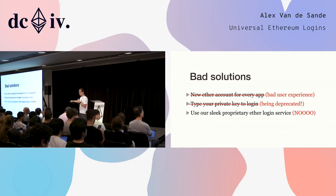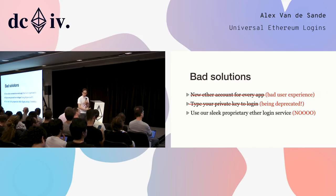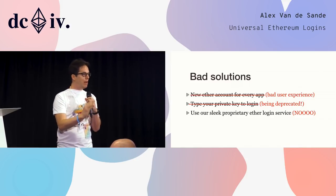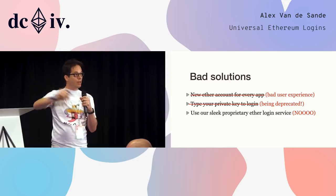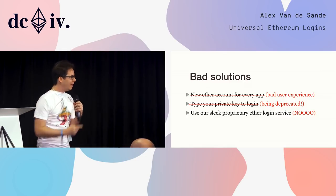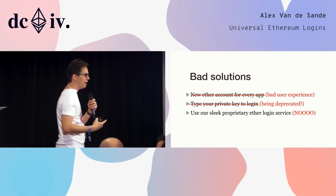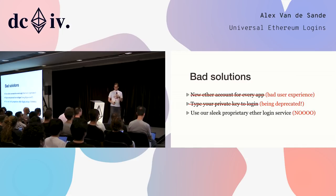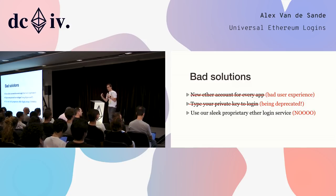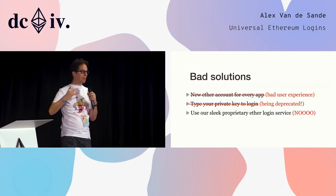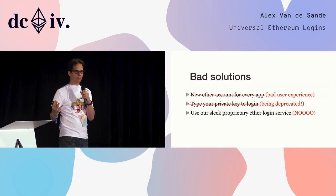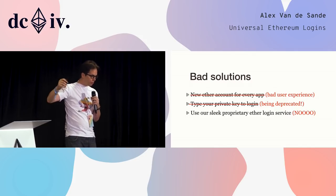Our first attempt: every time you download a new app, you create a new ETH account, write down a new seed phrase, move ETH to it. If you want the same account on your iPad, you have to do the same process and pay a transaction. Then we moved to an even worse solution — let's type your private key everywhere. There are solutions so bad they create a scam industry so big that Elon Musk goes on Twitter and complains about it. I'm glad we're getting out of this phase where we ask people to type their private key or seed phrase to log into an app.